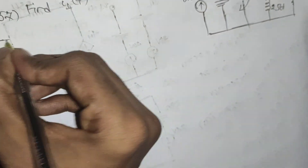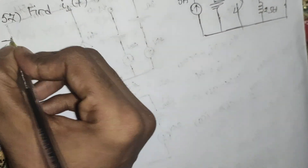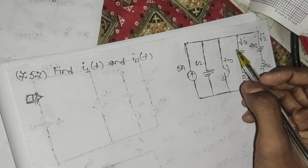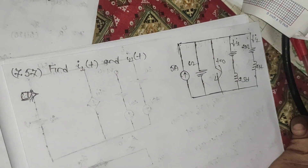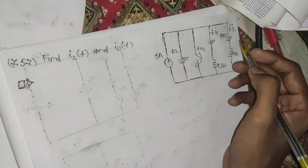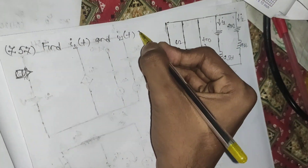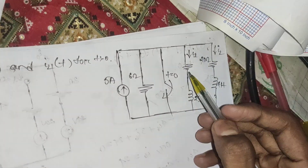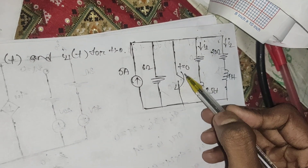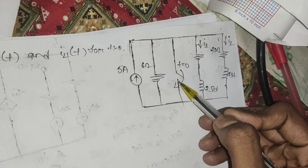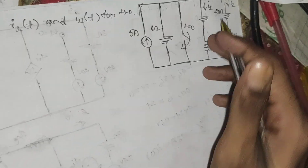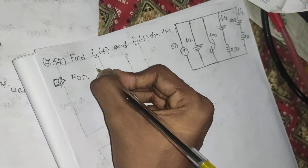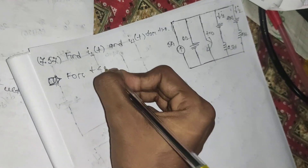Welcome everyone. Today we are solving problem 7.57 from Sadiku's book. The problem says find i1(t) and i2(t) for t greater than 0. The switch is currently open and will be closed when t equals 0. Let's calculate for t less than 0.